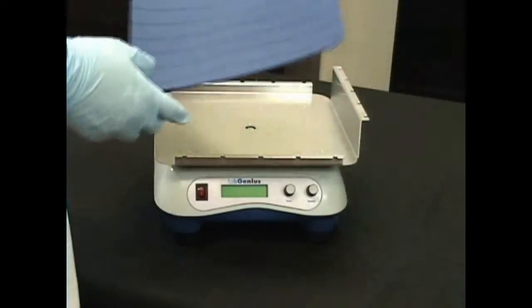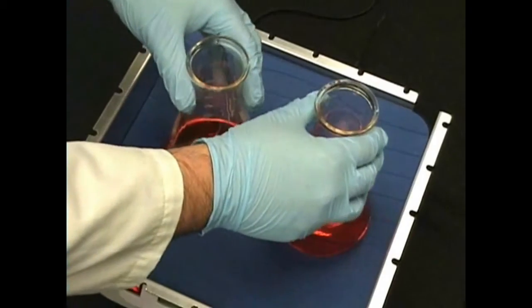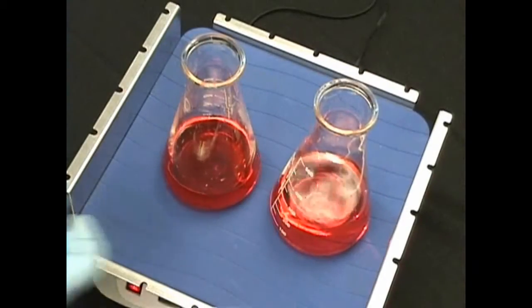Skid-free ribbed rubber mat acts as non-slip surface for petri dishes, culture bottles, media dishes, and flasks.